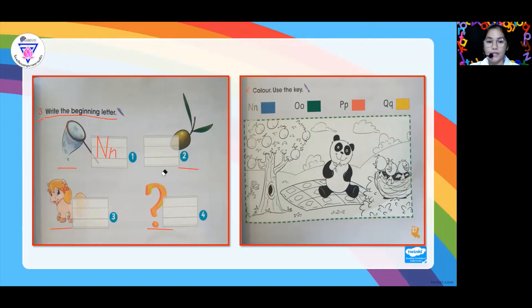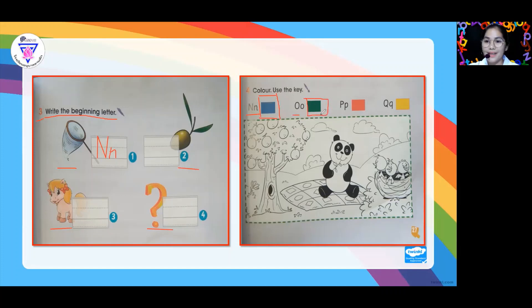Please do number two, number three, and number four — the beginning letter. And for number four, I want you to color using the keys. N is color blue, O is green, P is pink, and Q is yellow.